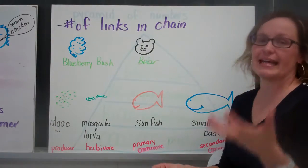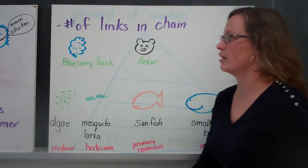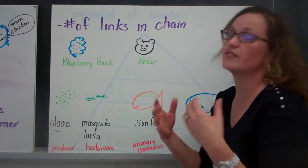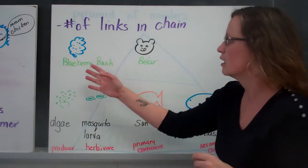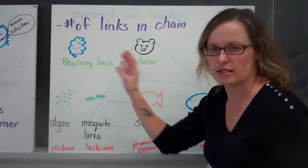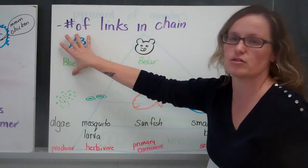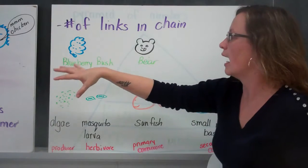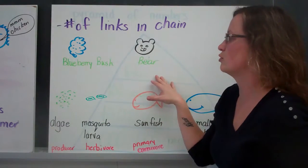Now the number of links in the chain of the food chain can vary. You could have two links, and the Sun is sort of a given, so it's not listed in the links. The food chain begins with that producer. So for this there's only two links in this food chain.